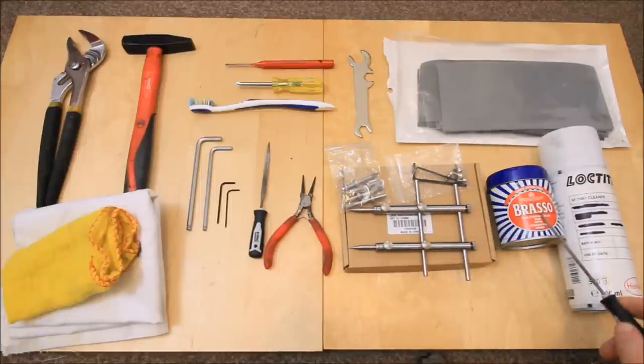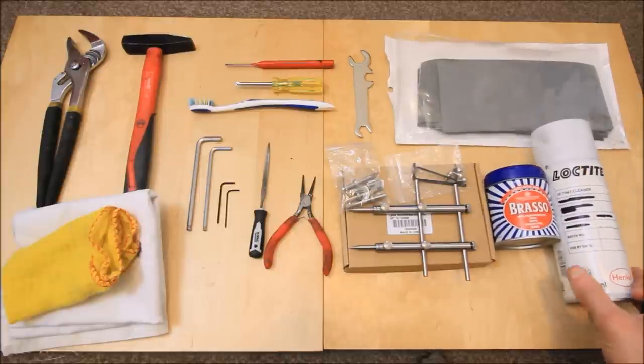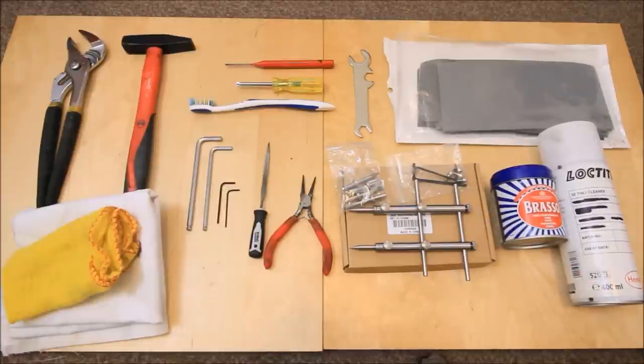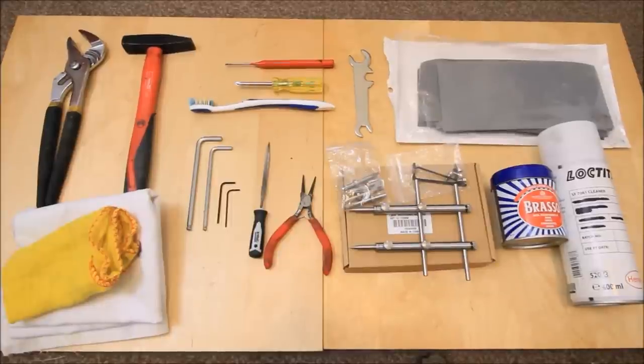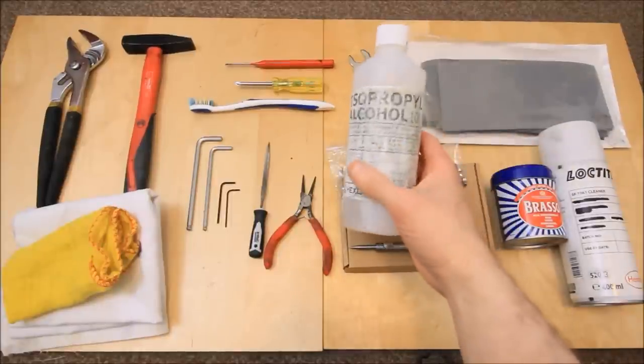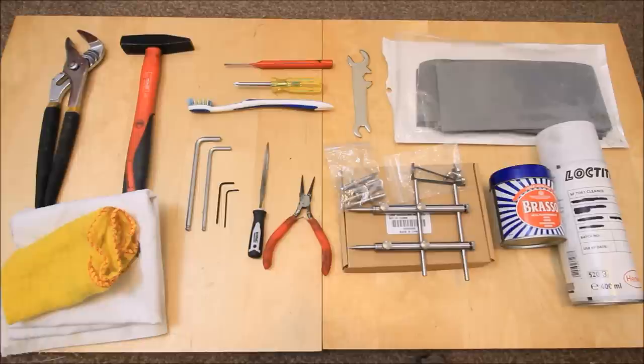And so you're going to need some metal polish and some Loctite degreaser cleaner. If you don't have that, you can alternatively use WD40 or use some Isopropyl Alcohol as your cleaning agents.